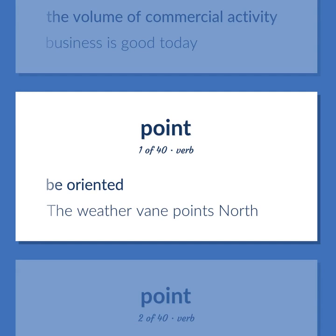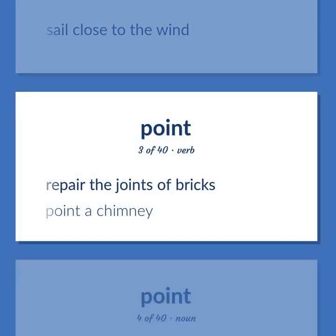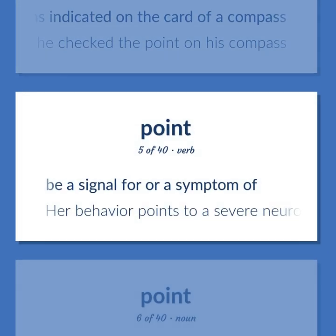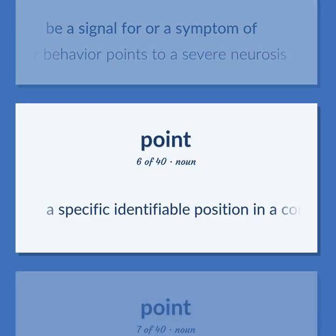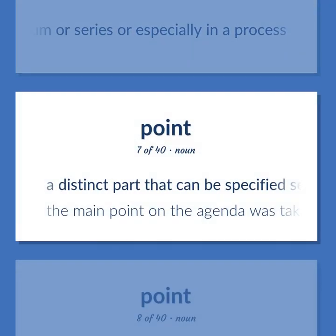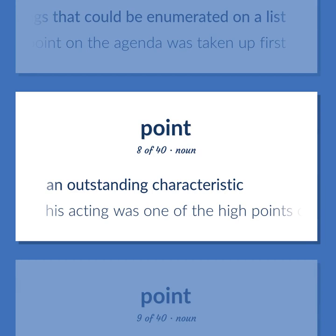Point: be oriented. The weather vane points north. Sail close to the wind. Repair the joints of bricks — point a chimney. Any of 32 horizontal directions indicated on the card of a compass — he checked the point on his compass. Be a signal for or a symptom of — her behavior points to a severe neurosis. A specific identifiable position in a continuum or series, or especially in a process. A distinct part that can be specified separately in a group of things that could be enumerated on a list. The main point on the agenda was taken up first. An outstanding characteristic — his acting was one of the high points of the movie.